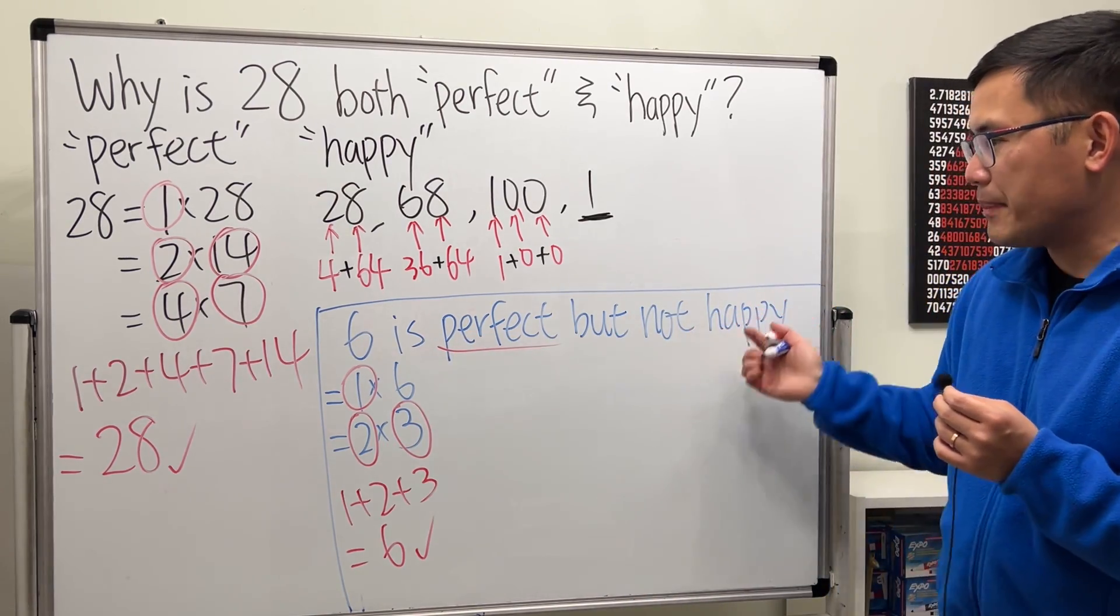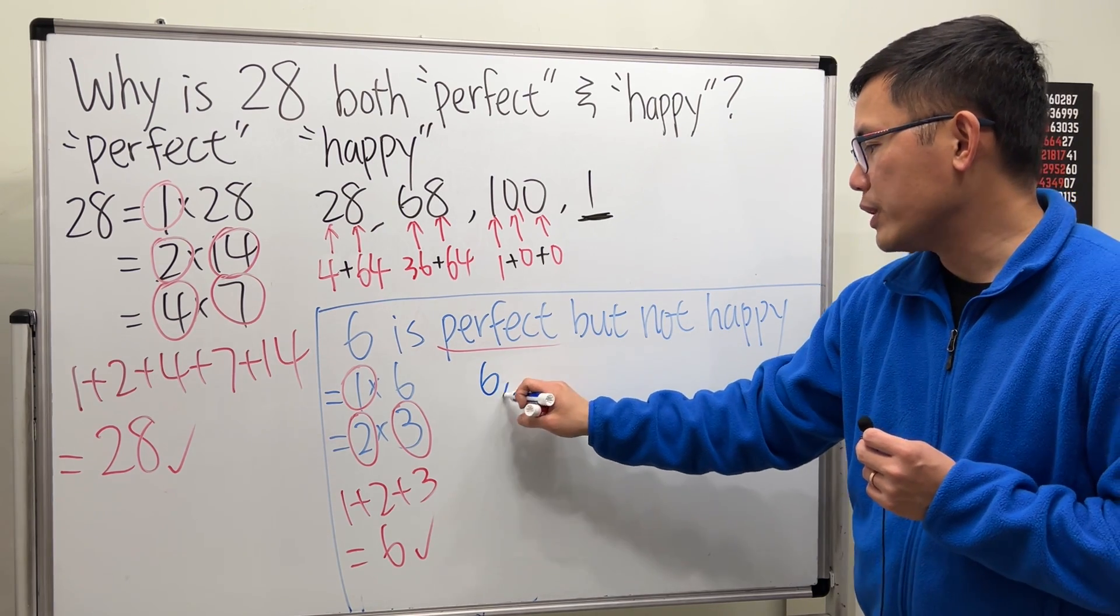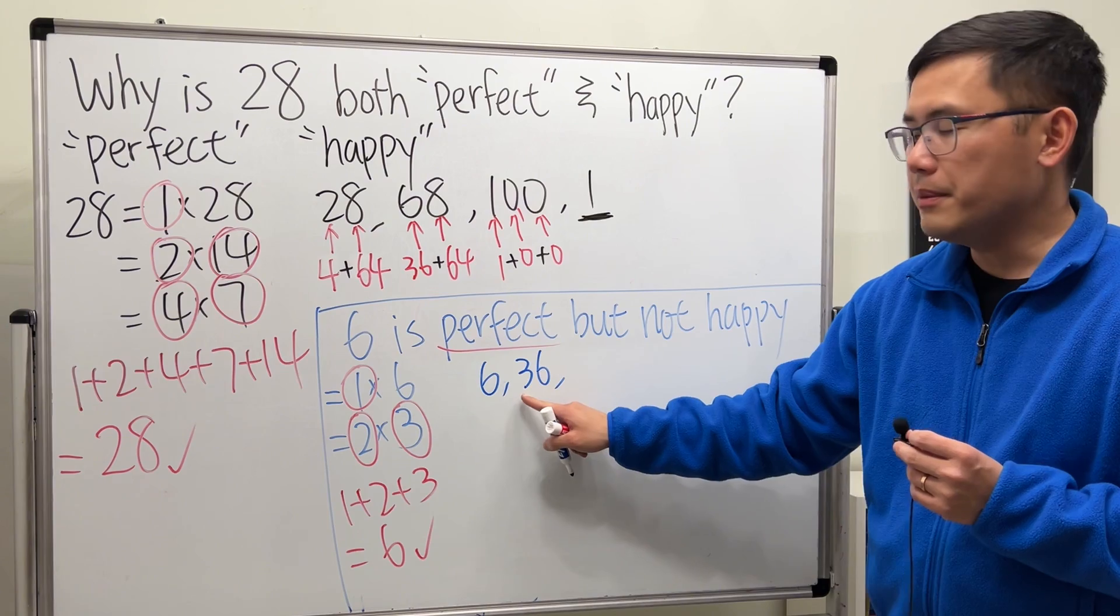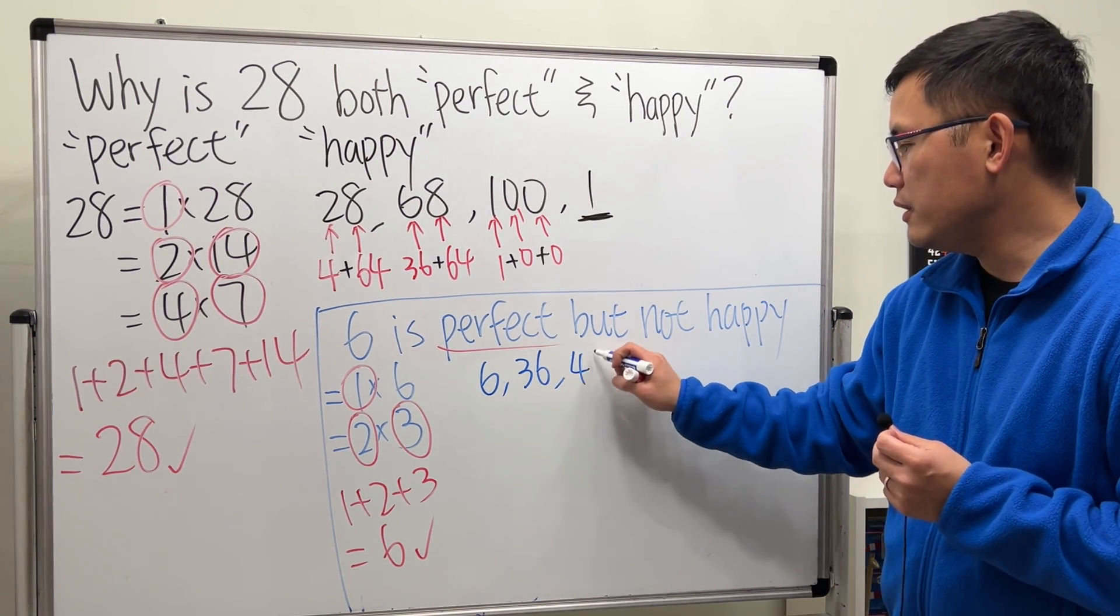Now, is this happy? Start with 6. It's just by itself, so squared out, we get 36. Next, we do this group, which is 9, plus 6 squared, which is 36. So, we get 45. And then we do 16 plus 25. That will be 41.